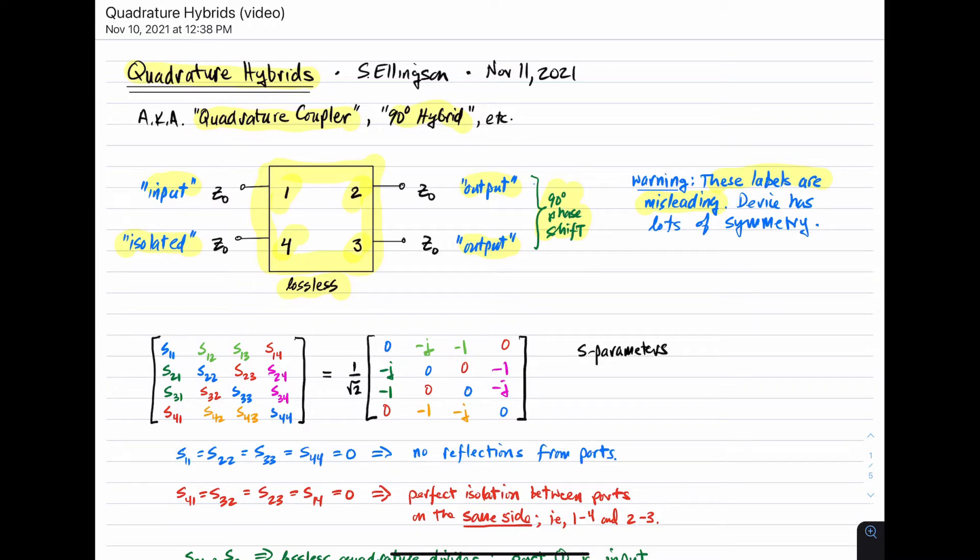So first, let's consider what it is that makes a quadrature hybrid a quadrature hybrid. And the easiest way to spell it out is in terms of S-parameters. So what I'm doing here is showing the four-port S-parameters for this device. Four-port S-parameters work just like three-port S-parameters work just like two-port S-parameters, there's just more of them. So I can define the behavior of a four-port in terms of its S-parameters, and this is what they are for the quadrature hybrid.